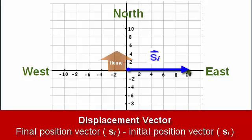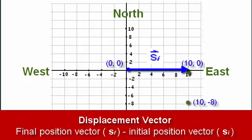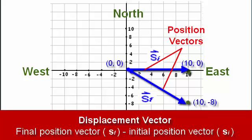The initial position vector is the displacement between the origin and the initial starting point. We originally started from home, therefore our initial position vector spans from (0, 0) to (0, 10). The same is true for our final position vector. Our displacement ended at (0, 10, negative 8), therefore our final position vector again starts from the origin and spans to that point. So the position vector gives us a sense of the displacement between the origin and the position in question, whether it be the initial position, the final position, or otherwise.